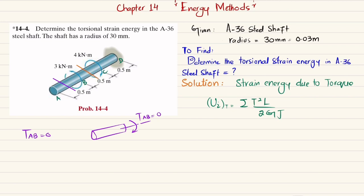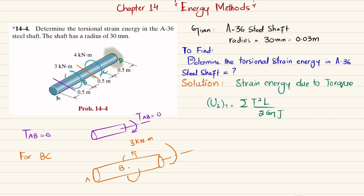When we cut along the length BC and draw the free body diagram, at point B there is a counterclockwise torque of 3 kilonewton·meters. To balance it, we need a clockwise torque T_BC, so T_BC = 3 kN·m (clockwise). The net torque in portion BC is 3 kilonewton·meters.